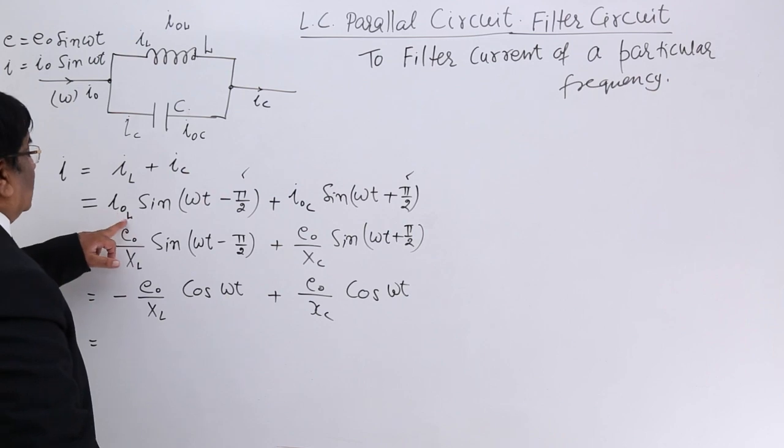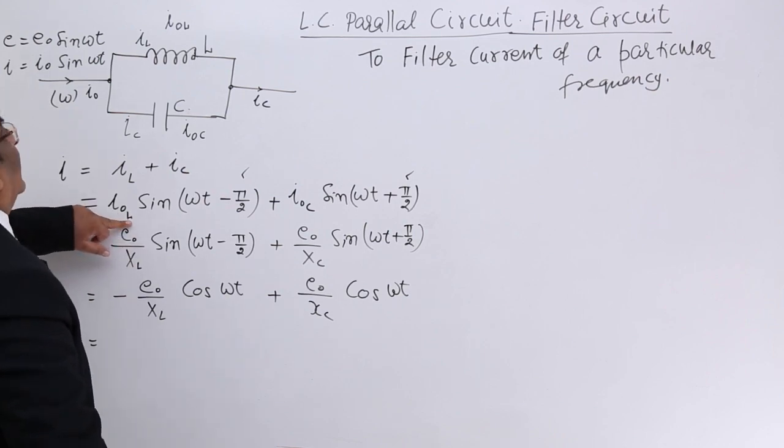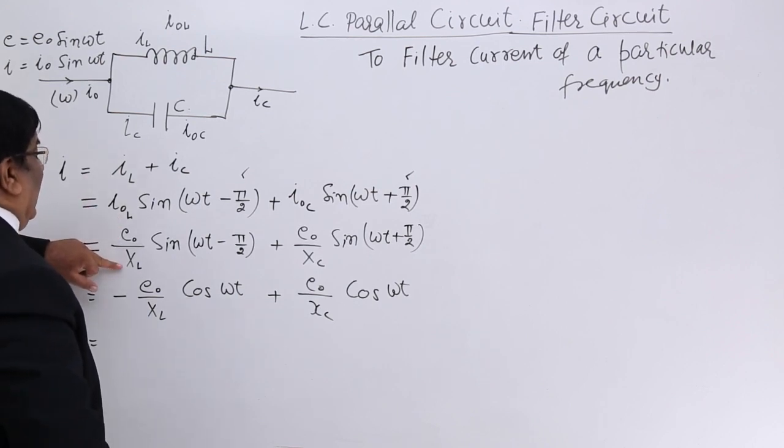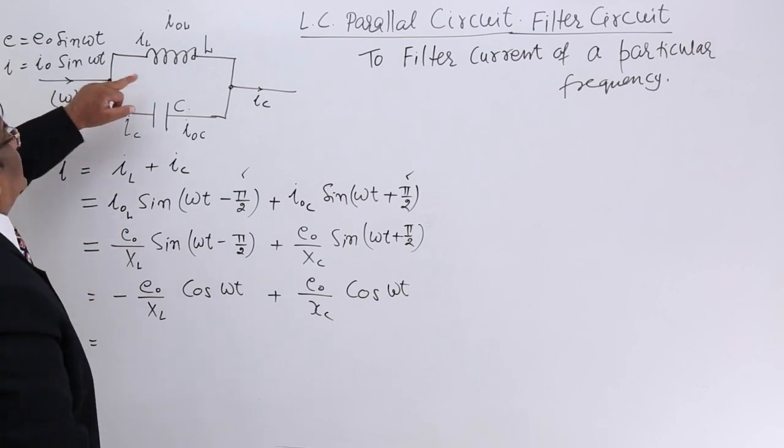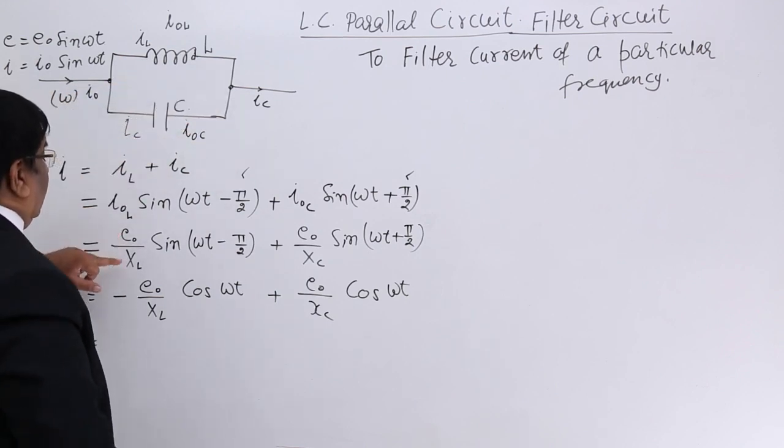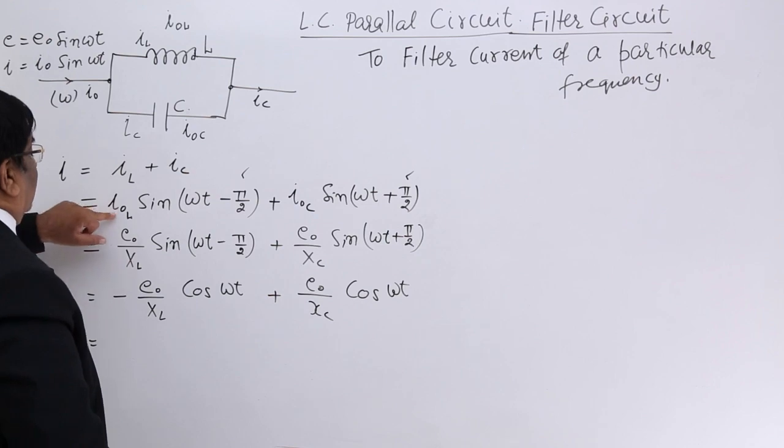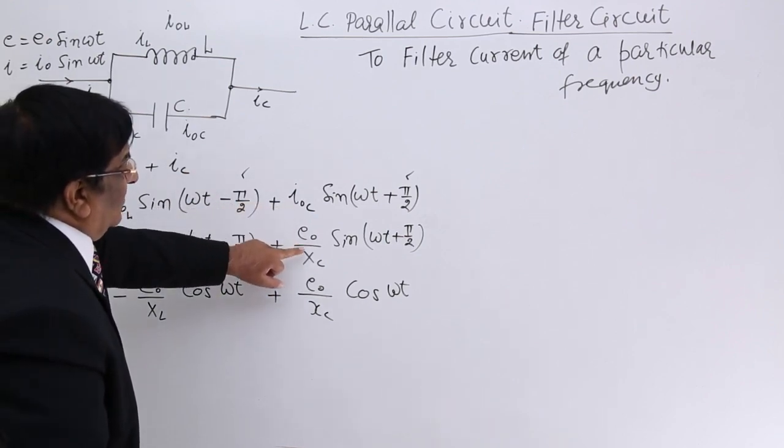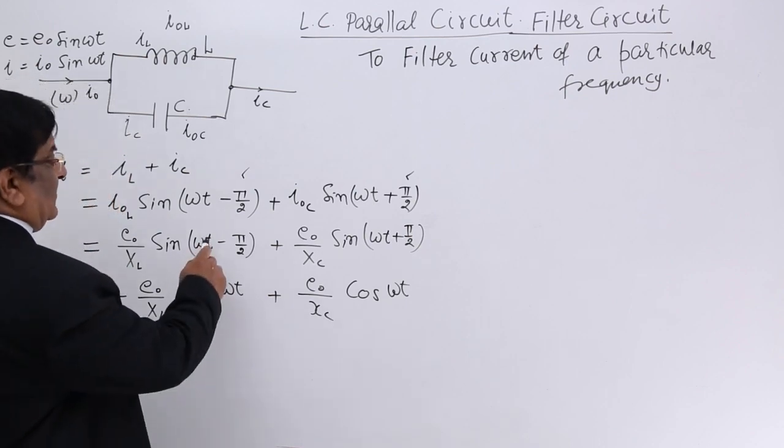And this we can write IC₀ sin(ωt + π/2) because this current is always advanced π/2 and this always retards π/2. So this I is divided into these two parts. Now this is maximum current through inductor, peak current of the inductor and this peak current can be written as potential difference divided by XL.